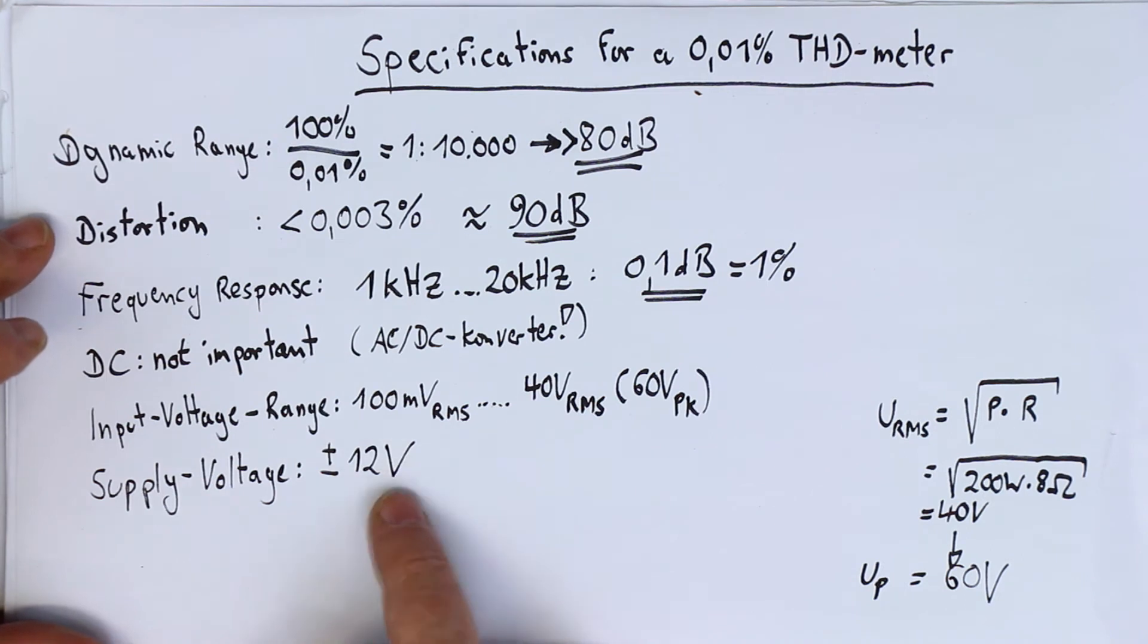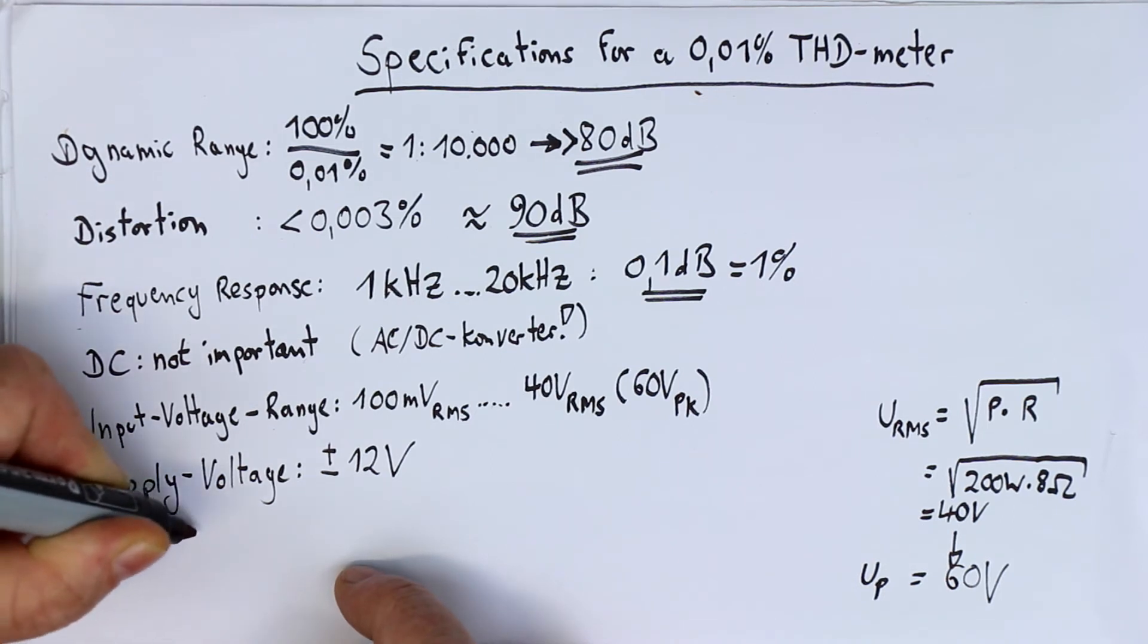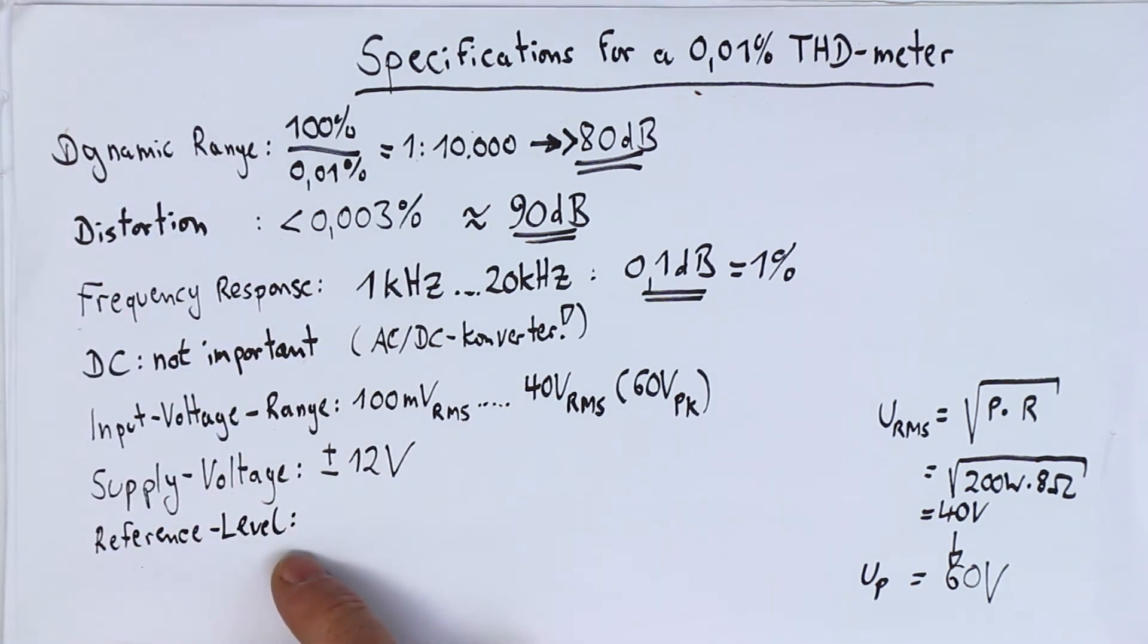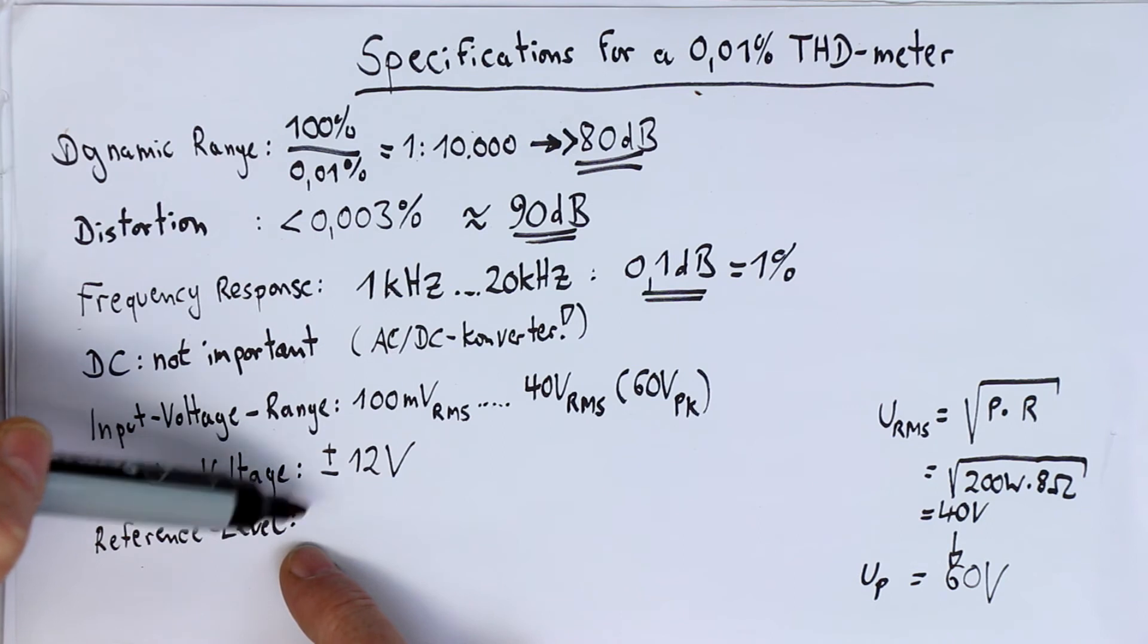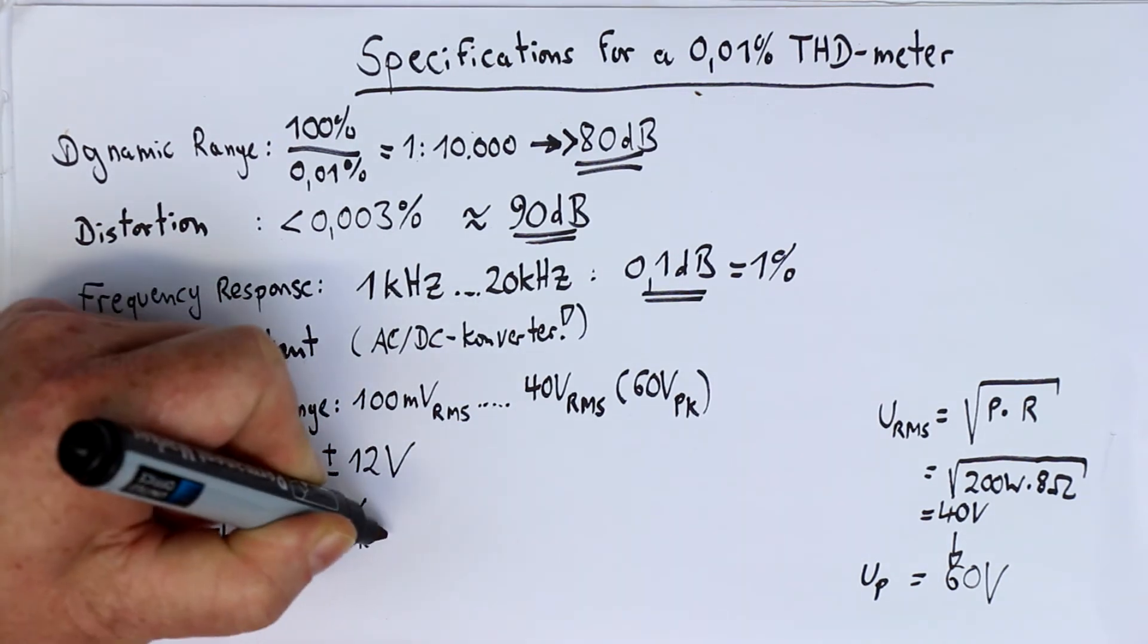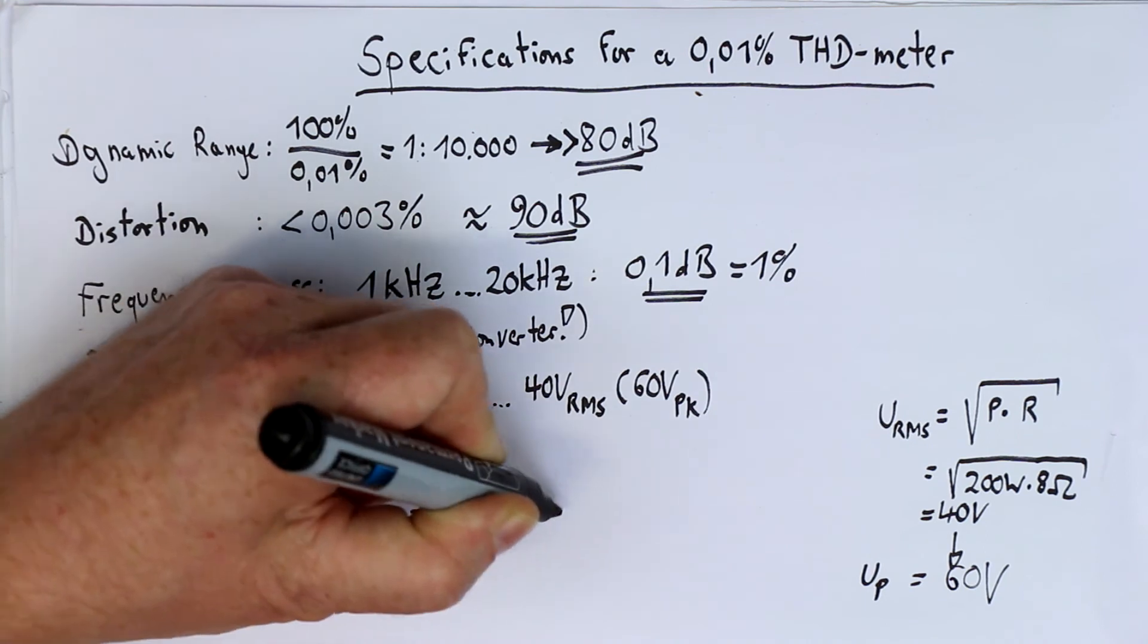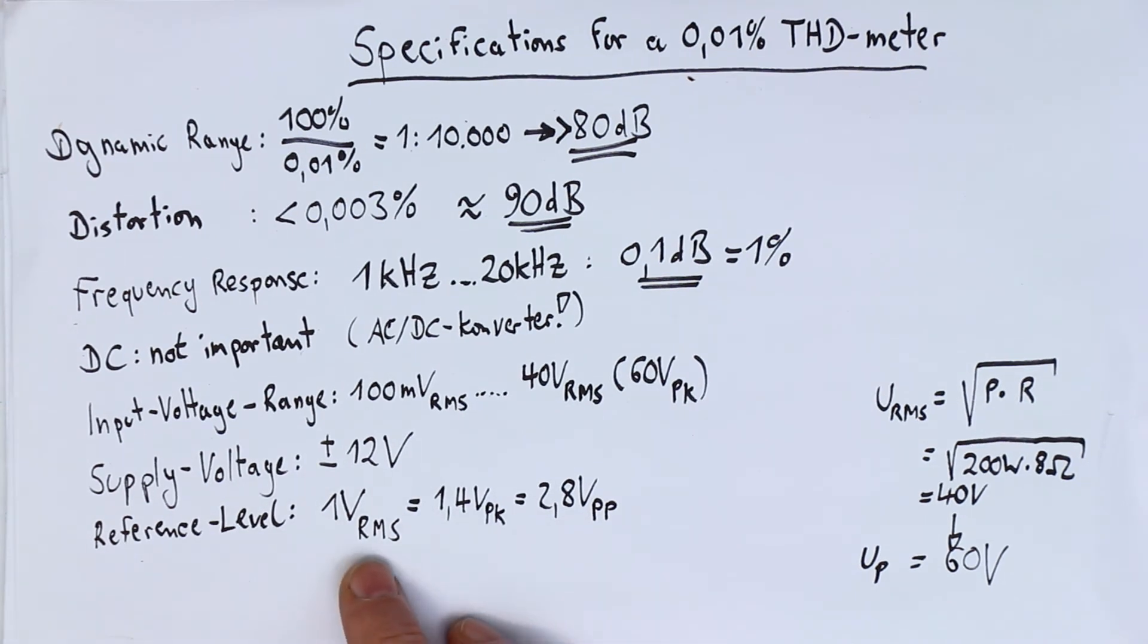Next we set a kind of arbitrary reference level for the 100 percent, which must be adjustable within an attenuator or an amplifier, depending on if our input voltage is smaller than our set reference level or if it's larger. Let's say we put that at one volt RMS, which is 1.4 volts peak or 2.8 volts peak-peak. This is most often used in audio application as a reference level.